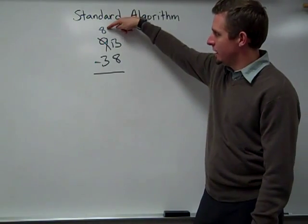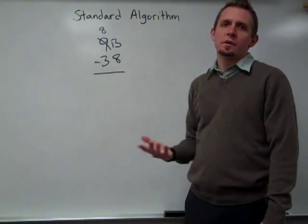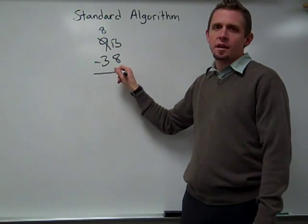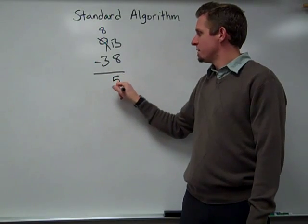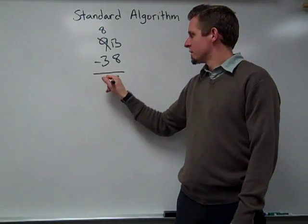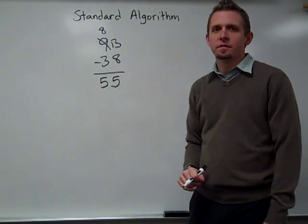So you can still see that I have 80 plus 13 would give me 93. So I take 13, now I can take away the 8, which gives me 5. And I have 80 take away 30, which gives me 50, my answer of 55.